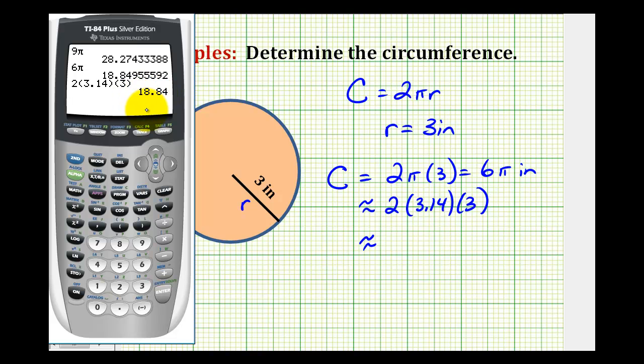So it is important to read the directions because if they do ask you to use three point one four for pi, you don't want to use the pi key on the calculator because it could possibly give you a slightly different answer when you round. We'll go ahead and use the more accurate value of approximately eighteen point eight five inches.